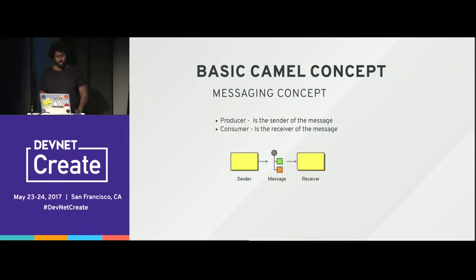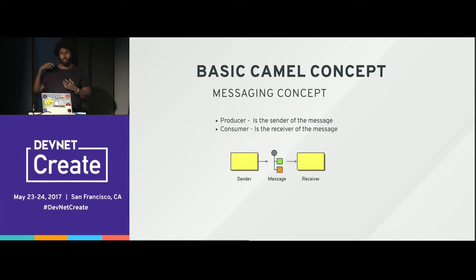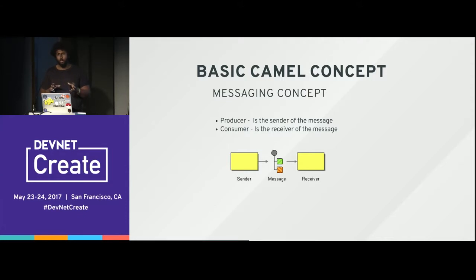Let's understand one concept: producer and consumer — also called subscriber and publisher. Pretty much, you're sending messages. The advantage of messaging is that you're not using HTTP. Some folks might want to integrate with other systems every time some event happens in your application. Another team could subscribe to a topic — whether you use Kafka or any other system — and get that notification.